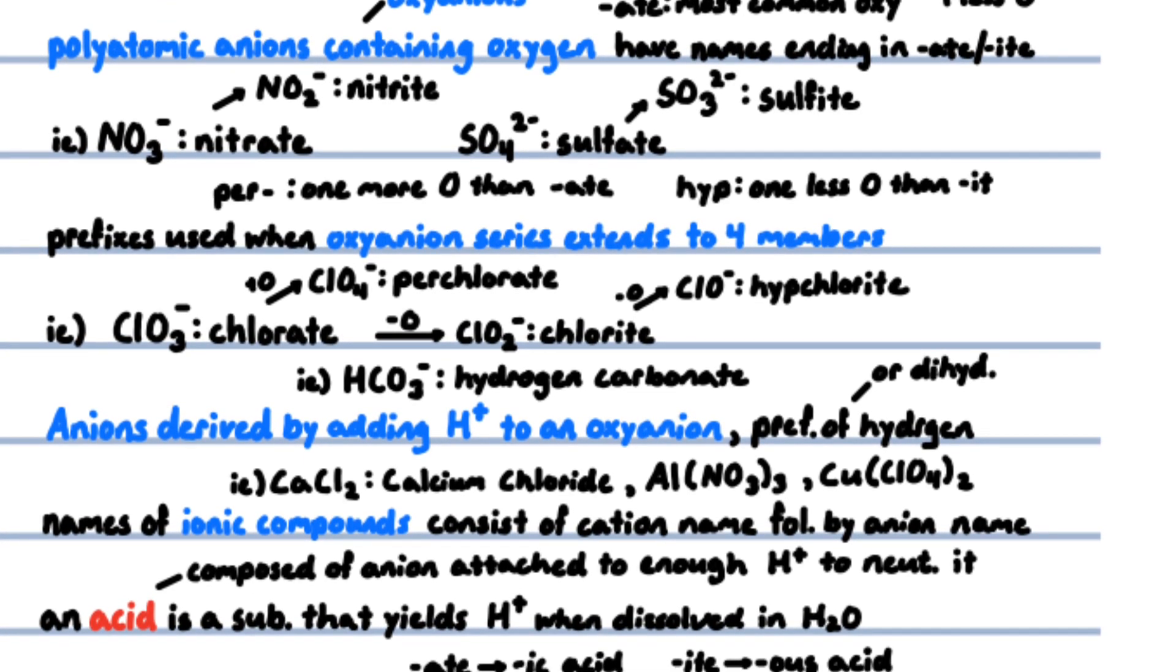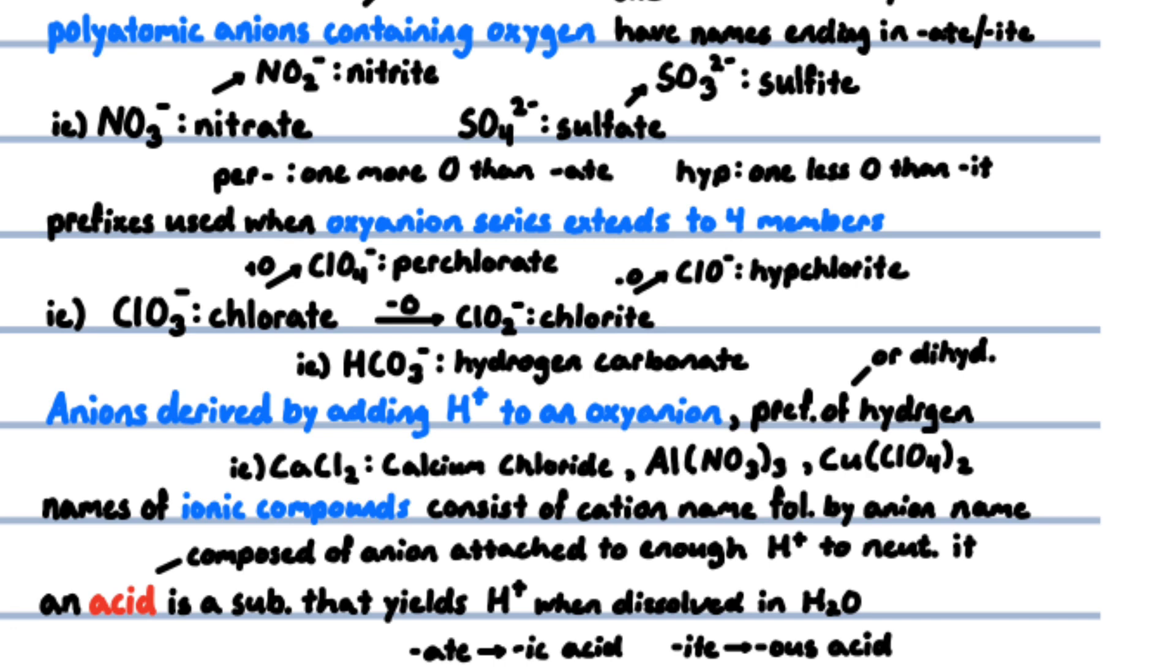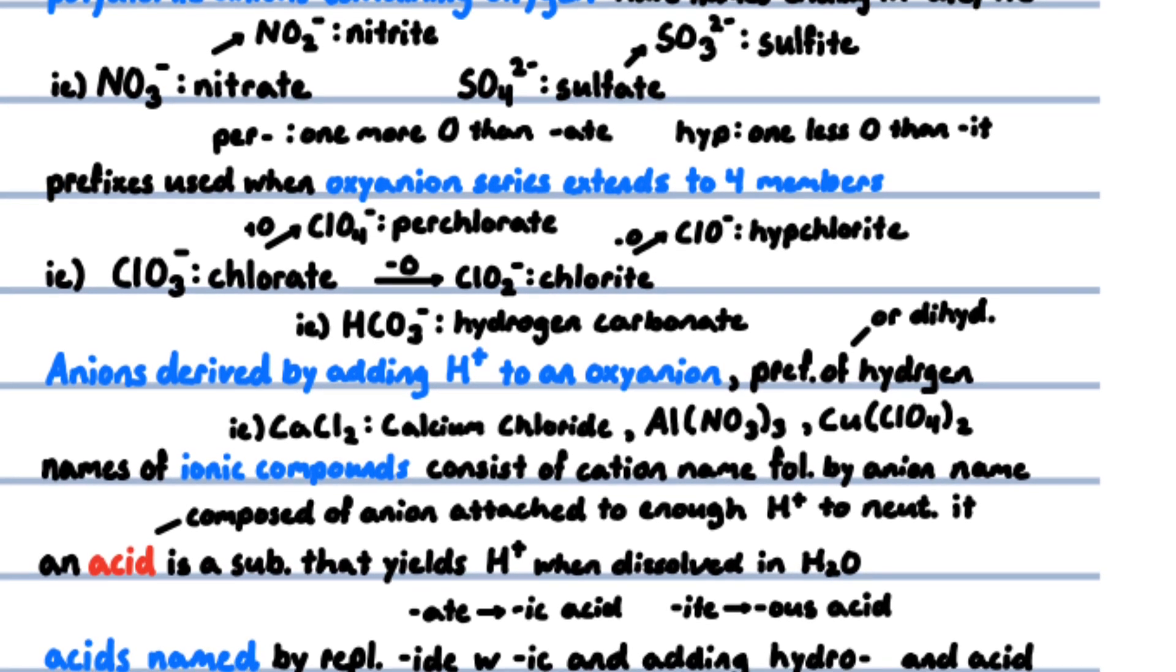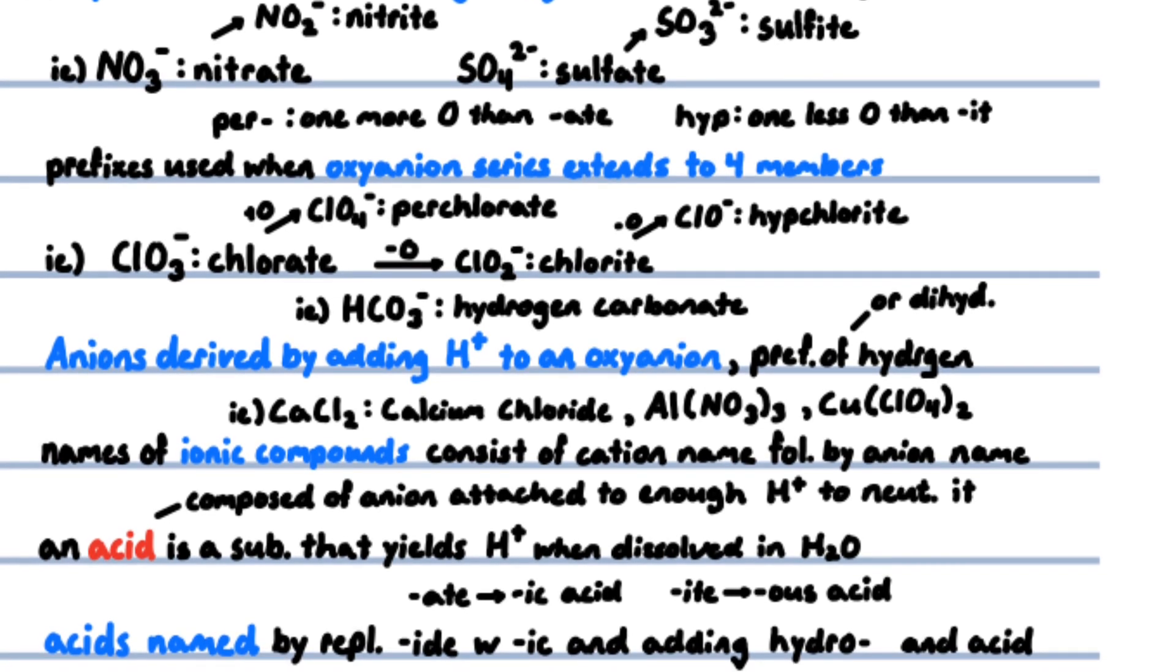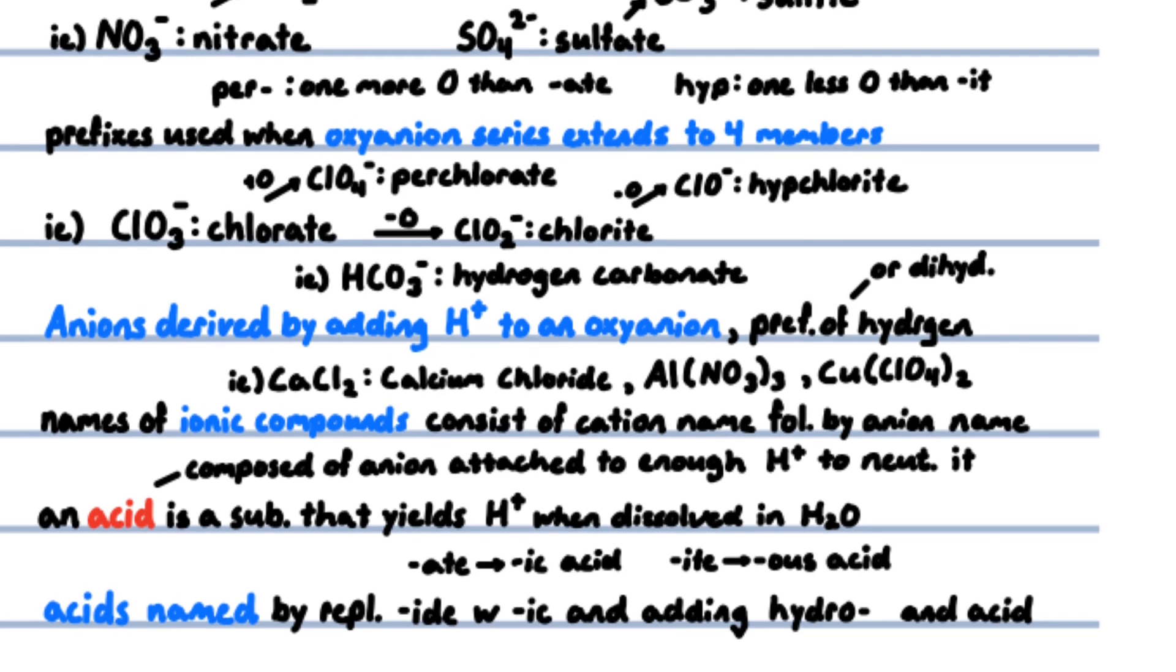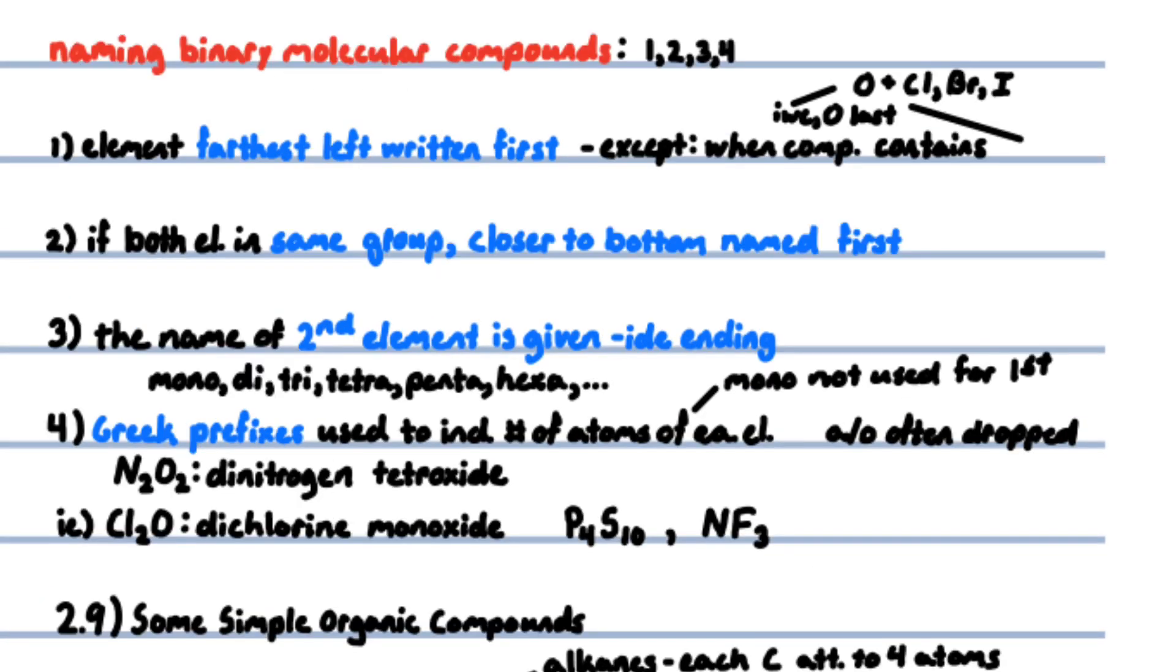For example, chloride forms hydrochloric acid and sulfide forms hydrosulfuric acid. Acids containing anions whose names end in -ate or -ite are named by changing -ate to -ic and -ite to -ous, then adding acid. Prefixes are retained—for example, perchlorate forms perchloric acid, chlorate forms chloric acid, and chlorite forms chlorous acid.